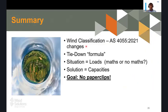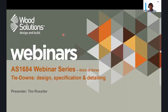To summarize: we reviewed the scope of AS4055 and 1684, revisited the wind classification changes in the 2021 version, dealt with the tie-down formula of pressure times area, worked out how to get loads using tables or calculations, then matched those loads to connector capacities — all with the goal of a building with no paper clips. Should the design wind event occur, the building stays together, everyone is safe, and we have a safe, efficient design.